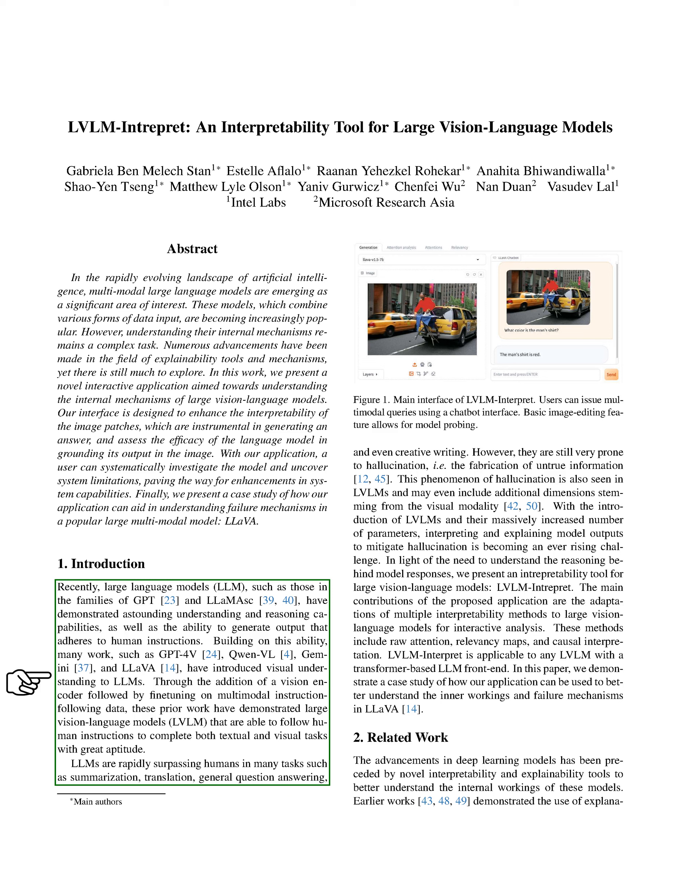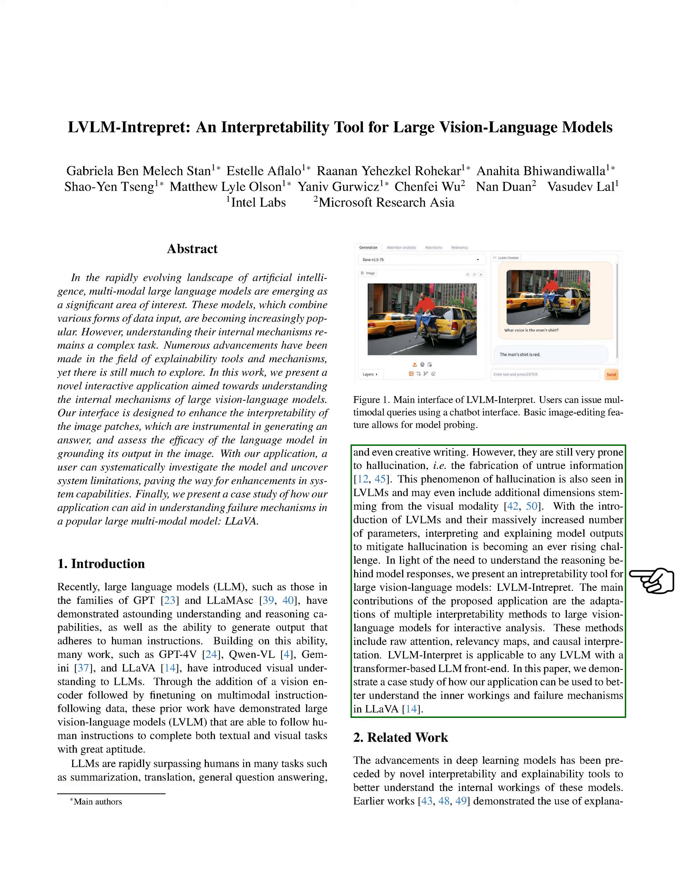While LLMs are outperforming humans in tasks like summarization, translation, and question answering, they still struggle with hallucination, which is the generation of false information. This issue also affects LVLMs, potentially amplified by the visual aspect. With the rise of LVLMs and their complex structures, explaining model outputs to address hallucination is becoming increasingly challenging.